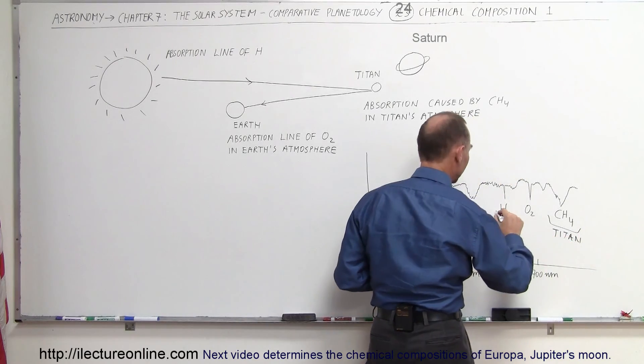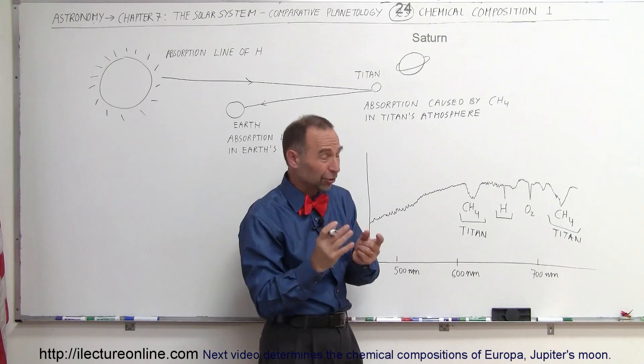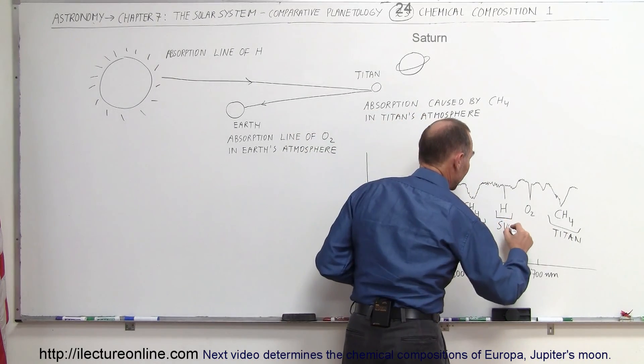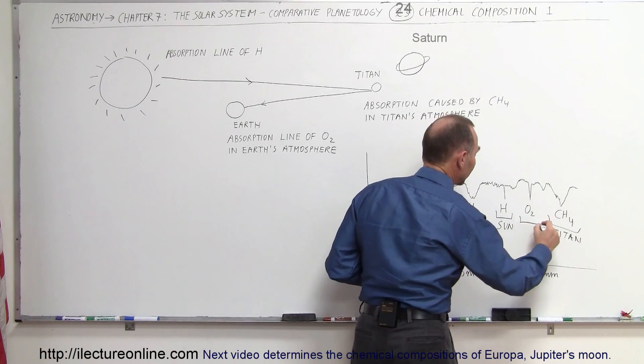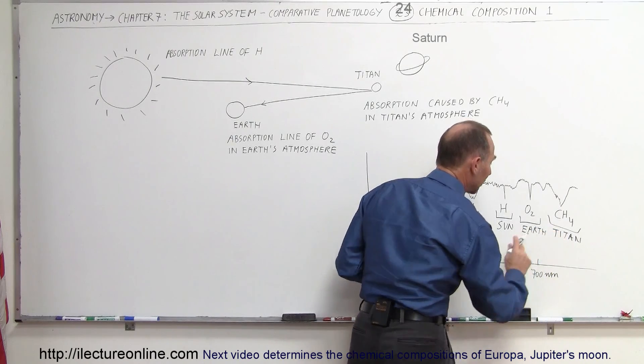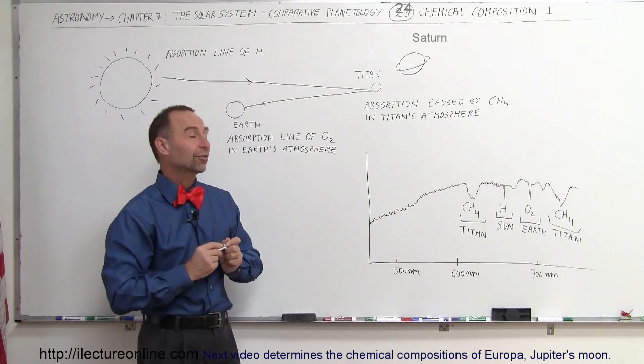But then we also have to realize that the hydrogen spectrum line, the absorption line I should say, that from the light of the sun, we know that this therefore came from the sun, has nothing to do with Titan. And then we also realize that the Earth's absorption line of oxygen is going to be a factor that we have to account for, and again, we cannot contribute that to the atmosphere of Titan.